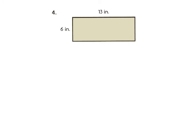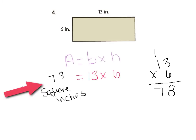Here's number four. Go ahead and work on number four on your own and press play when you're ready to go over the answer. We had a base of 13 and a height of 6, so we multiply 13 times 6 to get 78. The answer is 78 square inches — make sure you have the square inches.